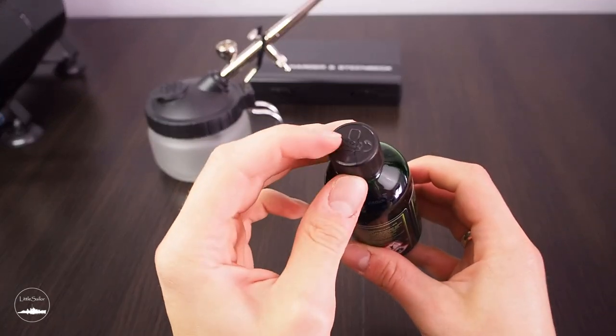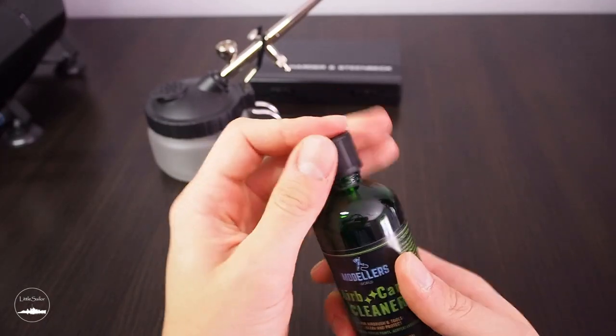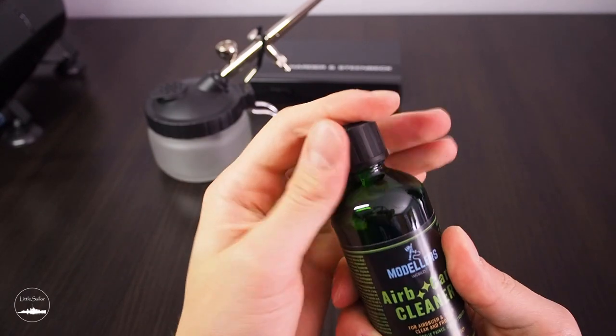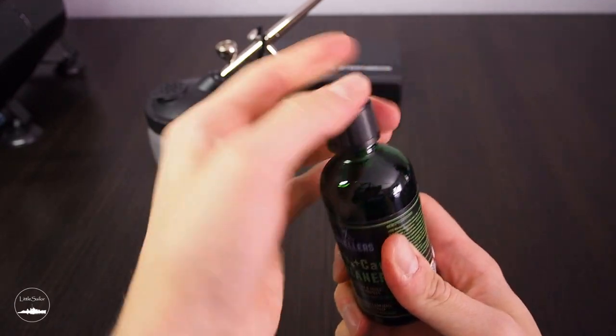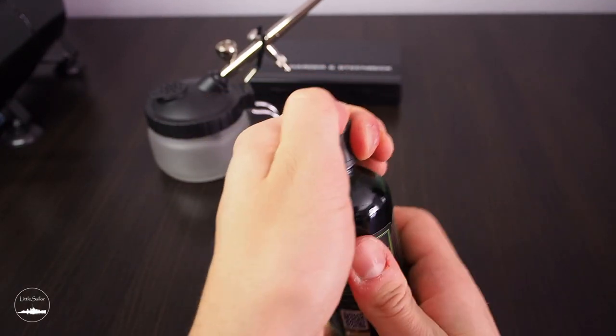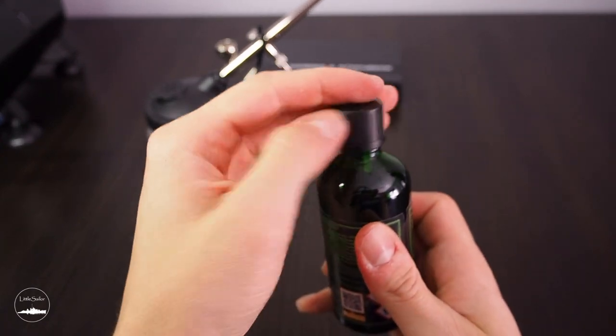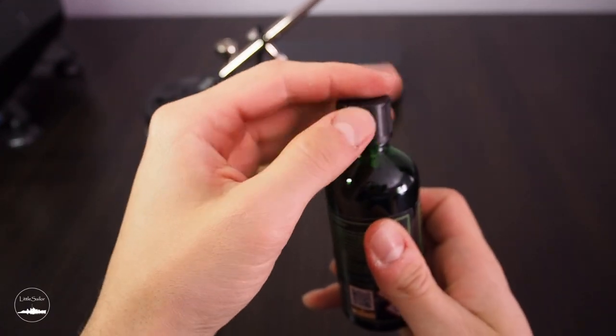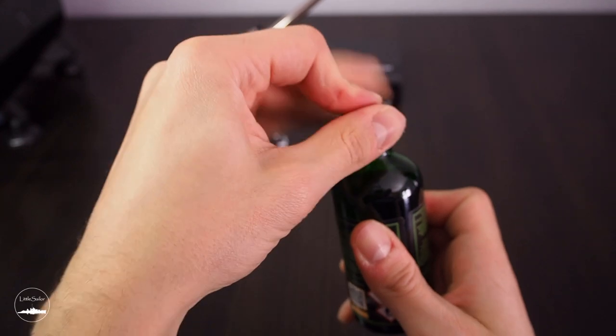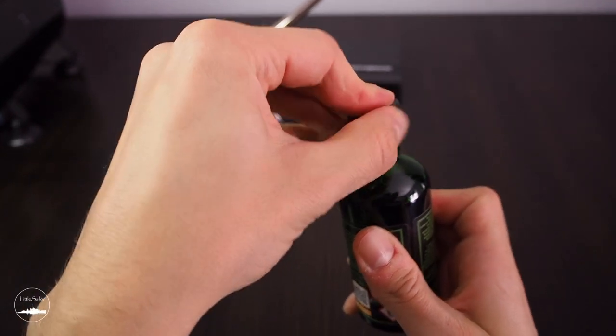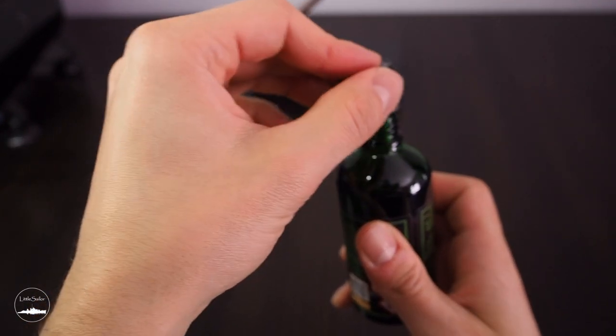Of course cleaning chemistry. I have Mr. Leveling thinner and Modeler's World airbrush care cleaner. Leveling thinner is one of the best thinners for airbrushing and this Modeler's World I want to test mostly for cleaning. I've got slightly damaged bottle probably during transport, the nut has broken. However it is tight so I hope it's gonna work fine.